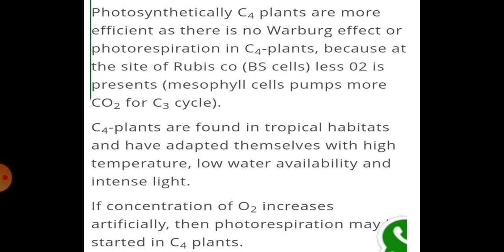If the concentration of oxygen increases artificially, then photorespiration may start even in C4 plants. Photorespiration happens in the presence of oxygen and light — isliye hum ne isko photorespiration diya hai. Jab oxygen ka concentration zyada ho ga, to photorespiration hoga aur food production stop ho ga. So this is all about Kranz anatomy. Hope you all have understood. Thank you everybody.